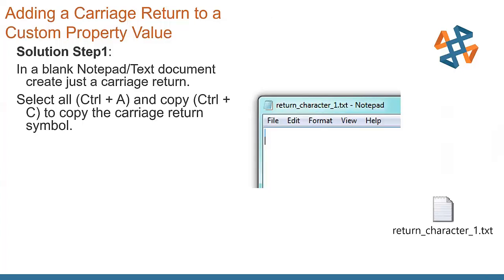Inside of a blank notepad or text document, all you have to do is create just a carriage return. You start up a new document, you hit enter one time. Select all by using control A and copy that, control C, and now it's going to copy a carriage return symbol to your clipboard at that point.